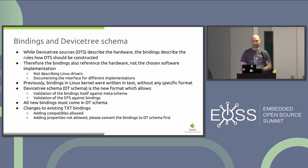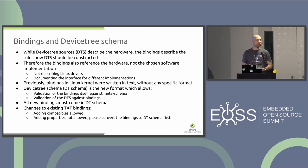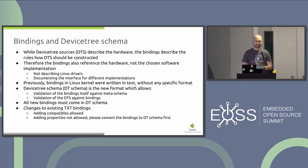What are the bindings and device tree schema? Device tree sources, the DTS, describe the hardware so the kernel can use it — mostly for cases when hardware is non-discoverable. Device tree bindings describe the rules for how the DTS should be created. Similarly to the DTS, bindings focus on the hardware. We don't describe Linux drivers or anything OS-specific; we document the hardware, which can be used by different implementations, although we focus on the Linux kernel.